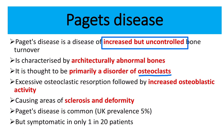In Paget's disease, the bone destruction capacity increases, and bone formation also increases, finally leading to sclerosis and deformity. This is because there is an imbalance between bone resorption and bone formation, resulting in physical and architectural deformity.